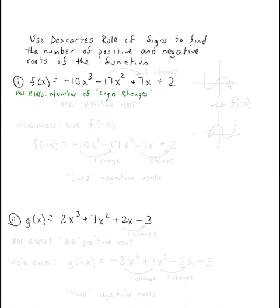This is a negative ten. The next coefficient is a negative seventeen. No sign change. From the negative seventeen, the next coefficient is a positive seven. So we found one sign change already.